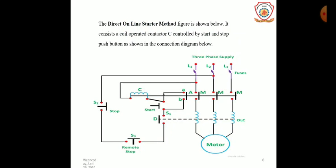The direct online starter circuit consists of a coil-operated contactor controlled by start and stop push buttons. S1 is normally open and S2 is normally closed. At start, S1 is closed for a fraction of a second, due to which the coil gets energized and attracts the contactor, so the motor directly gets supply. An additional contact ensures that as long as supply is on, the coil gets supply and keeps the contactor in its own position. When S2 is pressed, the coil circuit opens, the coil gets de-energized, and the motor is switched off from the supply.